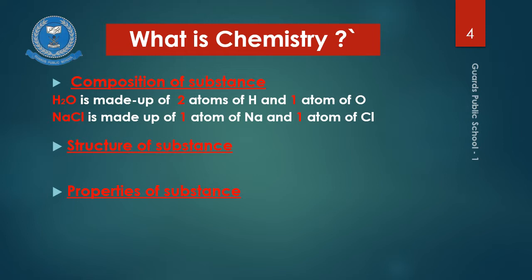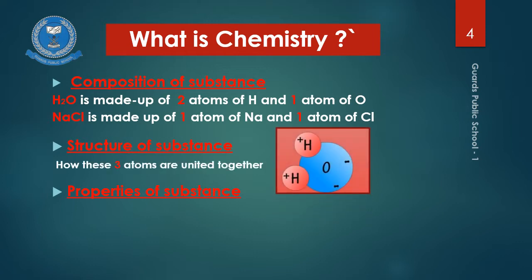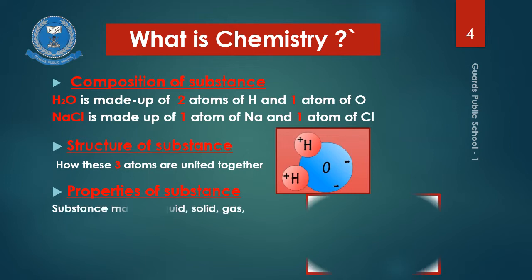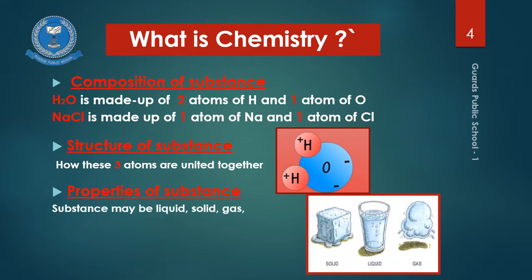The second part is structure of the substance. In structure of the substance, we have to find the type of force by which these atoms are joined together. For example, two atoms of hydrogen and one atom of oxygen, or one atom of sodium and one atom of chlorine, are joined together to form a substance. There must be some chemical force holding these atoms — these forces may be ionic or covalent, which we will discuss in the next chapter. Properties of the substance include whether the substance is liquid, solid, or gas, and whether it is colorful, colorless, or odorless. The explanation of all these things is known as chemistry.